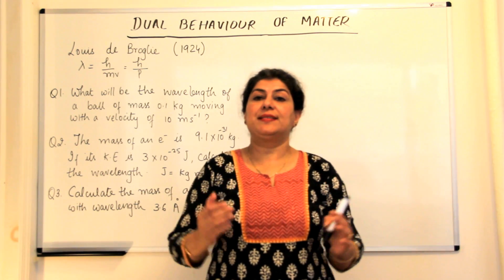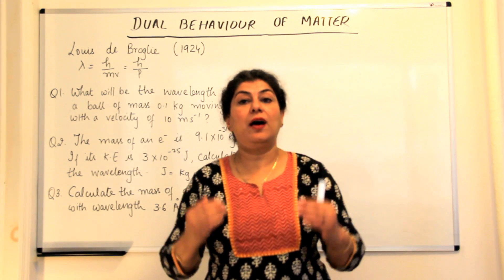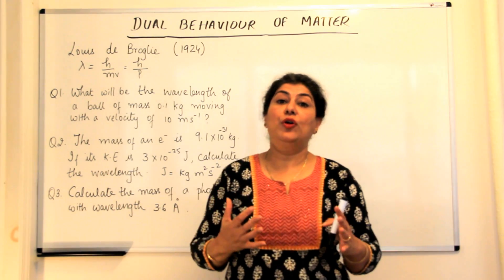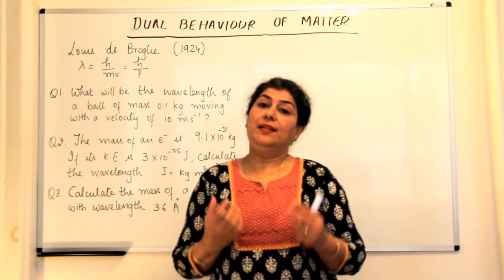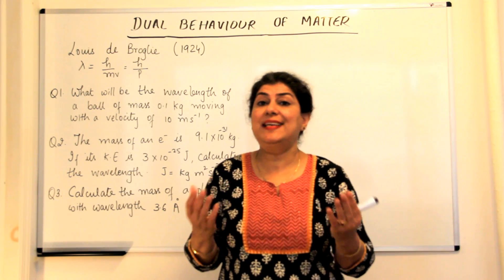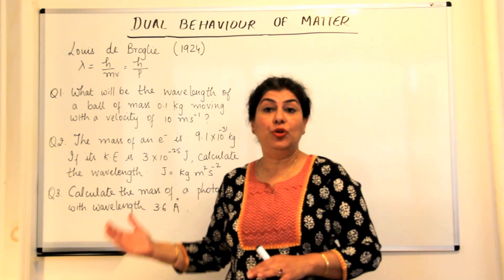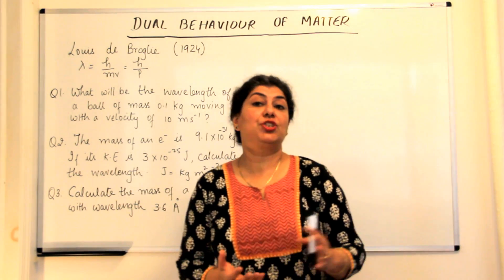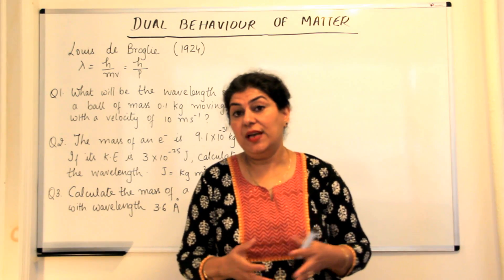Now what was the reason that scientists till now or till 1924 could not identify the wave nature of these particles? Why could we not see the wave nature although it was clearly established that electromagnetic radiations have wave nature?